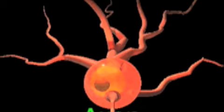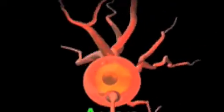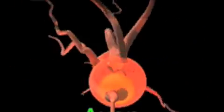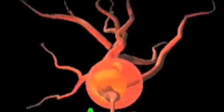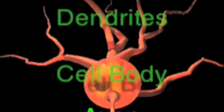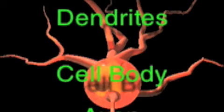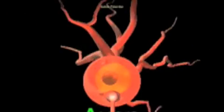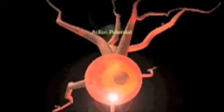By means of the action potential traveling down the axon, information eventually passes from one neuron to another or to glands or muscles. Events that occur along the dendrites, cell body, and axon are ultimately responsible for everything from our thoughts and actions to our feelings, dreams, and desires.